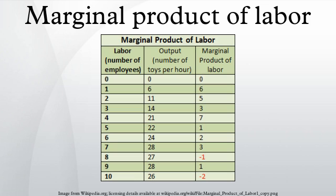In discrete terms, the marginal product of labor is defined accordingly. In continuous terms, the MPL is the first derivative of the production function. Graphically, the MPL is the slope of the production function.